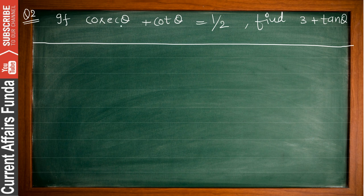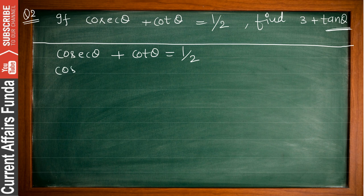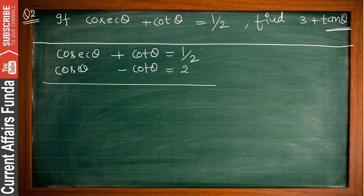So if cosec θ + cot θ = 1/2, then the value of cosec θ − cot θ = 2. Now we need to find the value of tan θ. If we cancel out cot, we won't get tan, so save the cot. Change signs: subtract the equations so cosec cancels out.